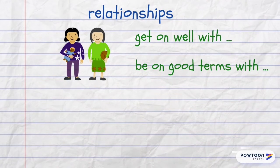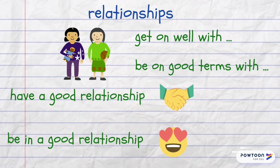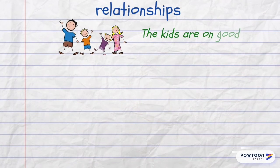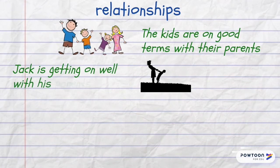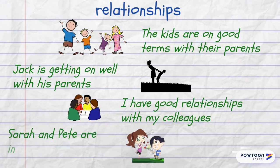When everything is fine between people, we can say that they get on well with each other, they are on good terms with each other, or they have a good relationship. We say 'in a good relationship' when we mean romantic things. For example: The kids are on good terms with their parents. Jack is getting on well with his parents. I have good relationships with my colleagues. Sarah and Pete are in a good relationship.